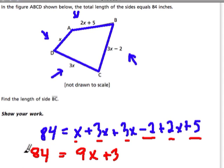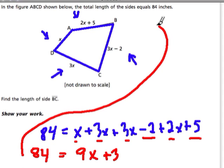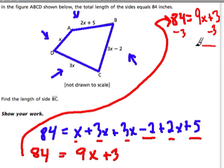Well, how do we find x? I'm going to go up here. 84 equals 9x plus 3. I'm going to subtract 3 from both sides, keep the balance, and that will make my life easier because now I have 9x equals 81.